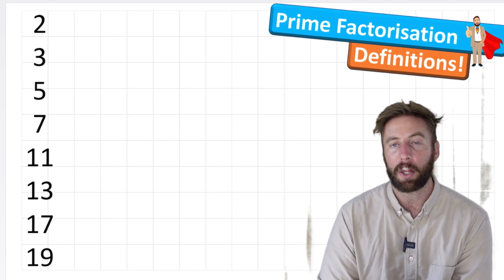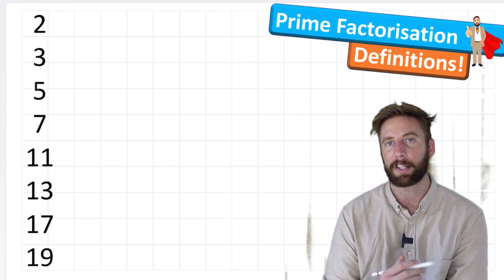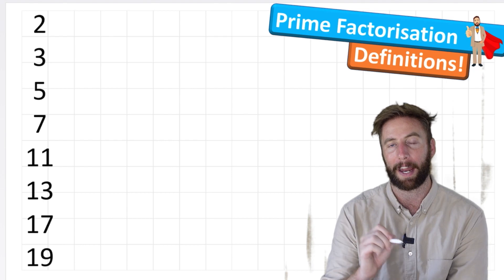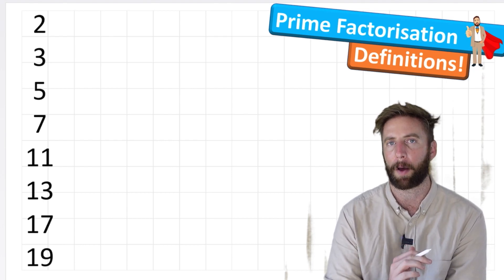Okay, now you might notice that the number 1 is not on this screen. And technically, number 1 should be a prime number because it falls in the same category. It can only be multiplied by 1 and itself. But for technical reasons we're not going to get into in this video, it's not a prime number.